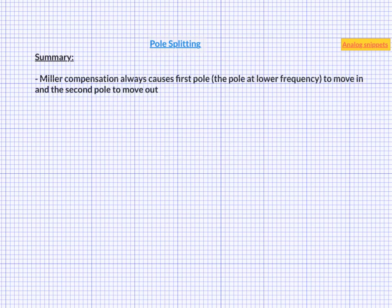To summarize, Miller compensation always causes the first pole to move in and the second pole to move out. Also strictly speaking in a complex system, we cannot attach a pole to a node. Poles belongs to the systems.